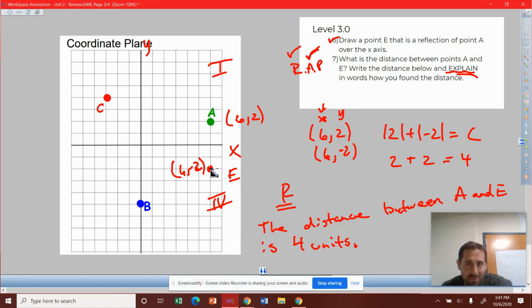Or I looked at the graph, double-checked with my equation, and counted from A down to E: 1, 2, 3, 4 units. You've got to find some proof. You've got to provide some kind of explanation.